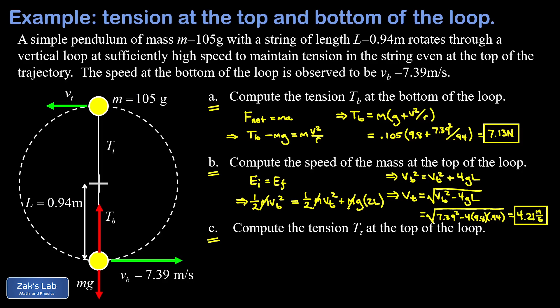Finally, we find the tension in the string at the top of the trajectory. We draw a force diagram for the pendulum bob at the top: gravity still pulls down with magnitude mg, and the string tension also pulls straight down, since strings can only pull. Both forces cooperate to provide the net centripetal force pointing toward the center of curvature.